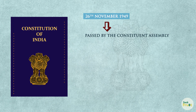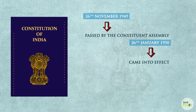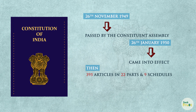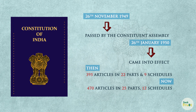On 26 November 1949, the Constitution of India was passed by the Constituent Assembly. On 26 January 1950, it came into effect. The Indian Constitution had 395 articles, 22 parts, and 8 schedules at the time of commencement in the year 1950. Currently, the Constitution of India comprises 470 articles in 25 parts and 12 schedules. There have been 104 amendments made in the Indian Constitution till date.